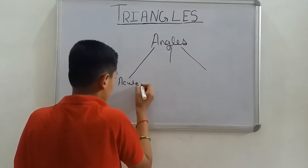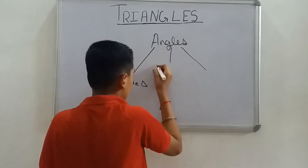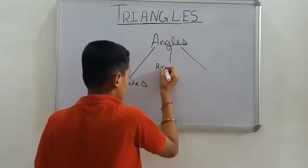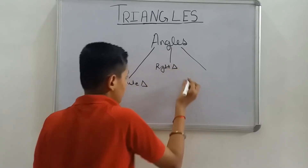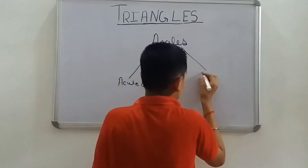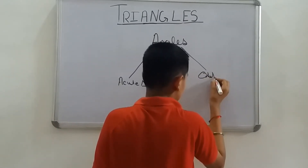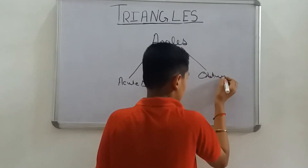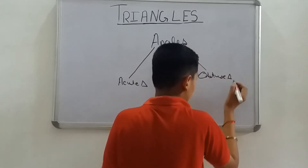There are three types: acute angle triangle, right angle triangle, and obtuse angle triangle.